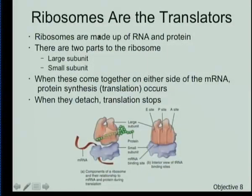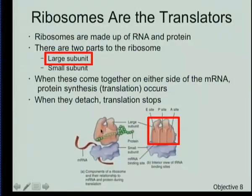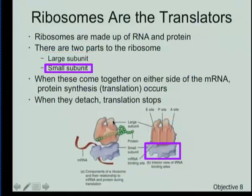As we discussed these as organelles, we said that there was a large subunit and a small subunit that get assembled. And with that assembly, we actually form three specific sites on the ribosome where that messenger RNA strand combines.